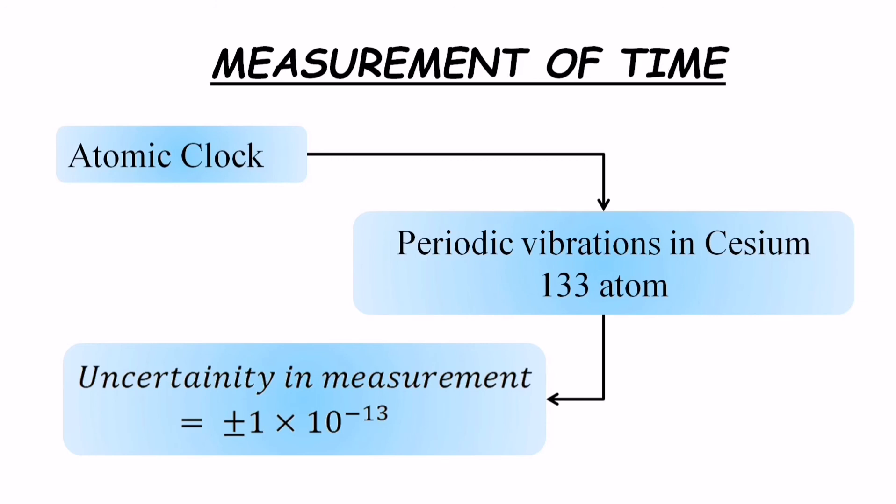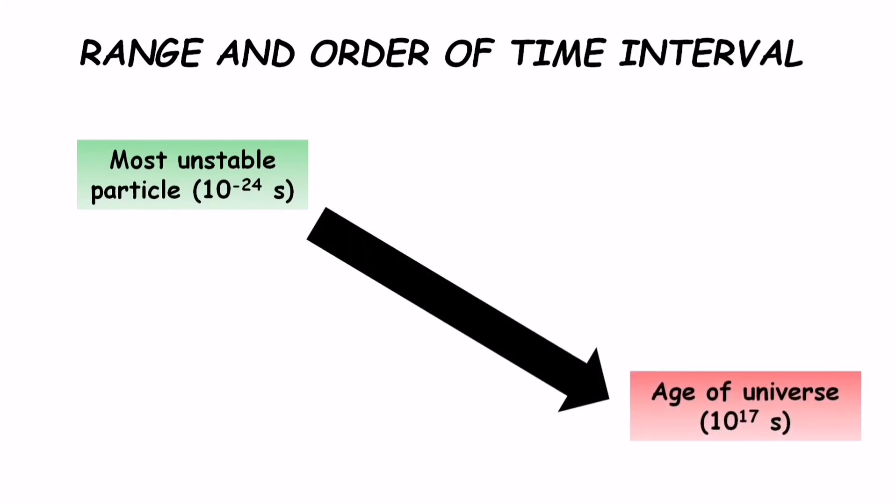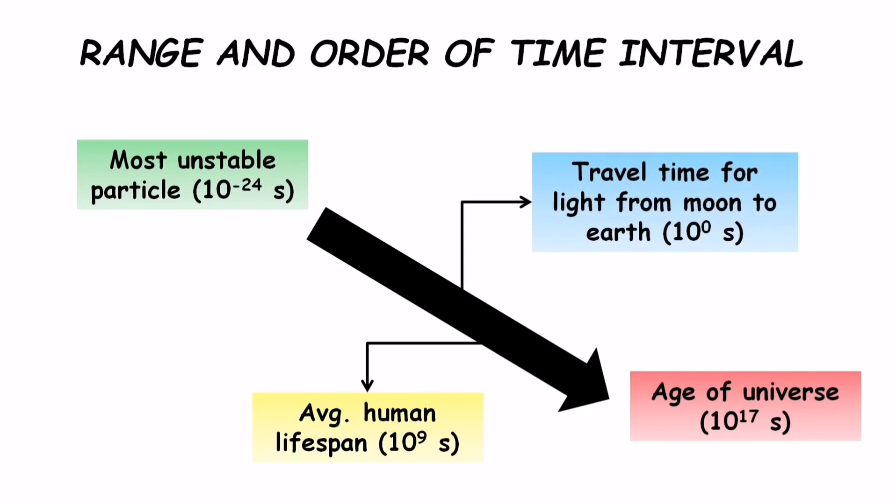And just like measurement of length and mass, time also comprises of a wide range of activities in the universe. Starting from the smallest one, that is lifetime of the most unstable particle in order of 10^-24 seconds, it goes up to as long as the age of universe, that is 10^17 seconds. And every other phenomenon in the known universe takes place within this range of time intervals. May it be average human lifespan of the order of 10^9 seconds, or the time taken for light to reach from moon to earth, which is 1 second, or even period of x-ray, which is 10^-19 seconds—everything falls in this range. The order of how much? 10^41, that you can get by subtracting 10^-24 and 10^17 seconds.